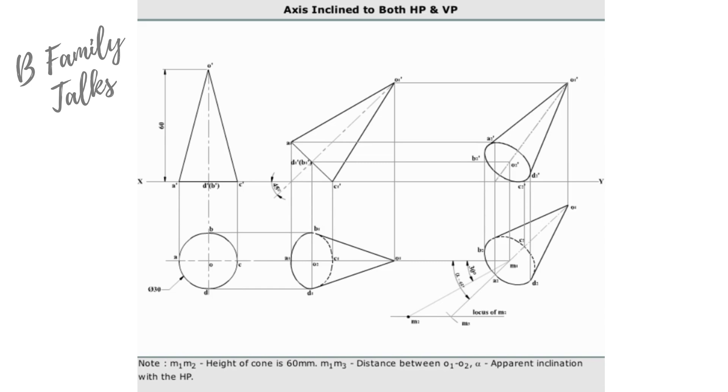M1 M3 is the distance between O1 and O2 as shown in the figure. Alpha is the apparent inclination angle with the HP.